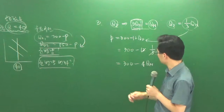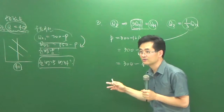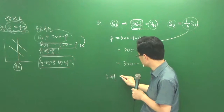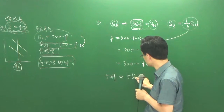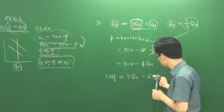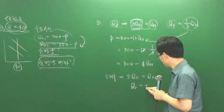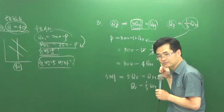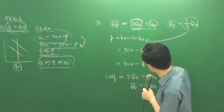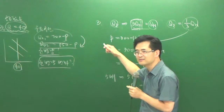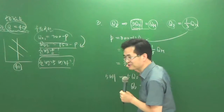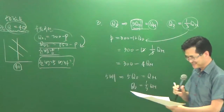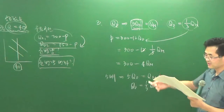300-12 곱하기 3분의 1 QM 이렇게 그러면 300-4 QM 이렇게 되죠. 간단하게 되는 거죠. 만약에 5배가 된다 하더라도 5QD가 QM이 되잖아요. 그러면 QD 자리에 5분의 1 QM 이걸 집어넣으면 되거든요. 어쨌든 이렇게 풀고요.